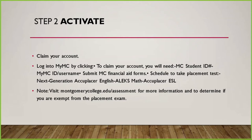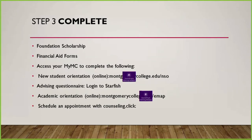The math, ESL, or Accuplacer test will be taken online — you don't have to go in person anymore. Also make sure you apply for the foundation scholarship, which allows you to get between $250 and $2,500 per semester, and you can always renew it. It's important to apply because some students don't qualify for free money or Pell Grants. Complete your financial aid forms and access MyMC to complete the student orientation online and the advising questionnaire, because if you don't complete all of this you will not be able to register.